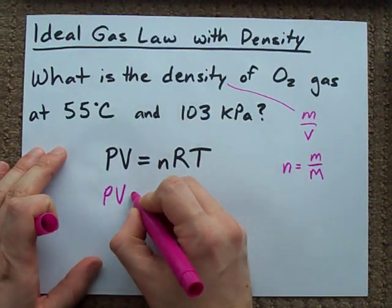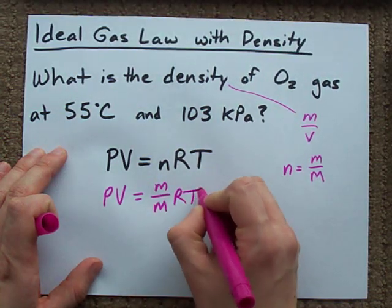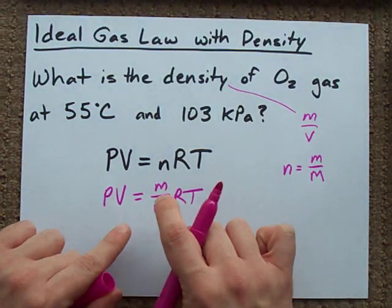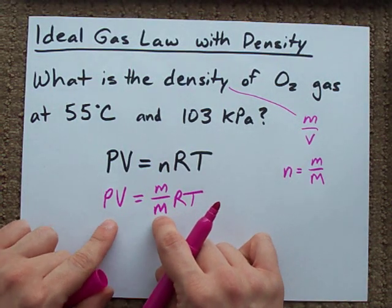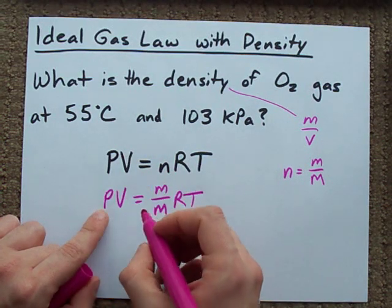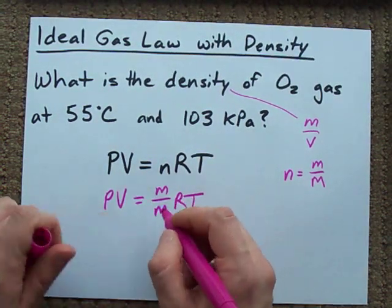I'm going to replace n with mass over molar mass, and then I'm going to rearrange for m over V. I'm going to undo division by molar mass on the other side, and then undo multiplication by RT and bring my V over.